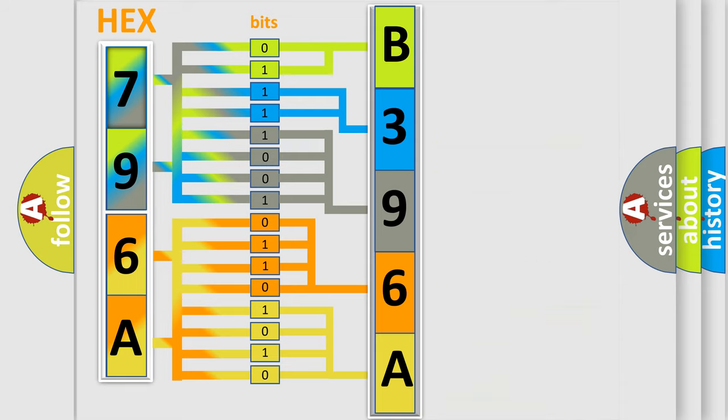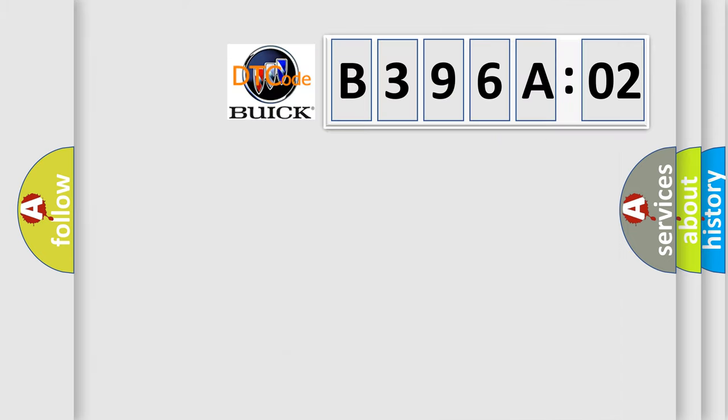We now know in what way the diagnostic tool translates the received information into a more comprehensible format. The number itself does not make sense to us if we cannot assign information about what it actually expresses. So, what does the diagnostic trouble code B396A02 interpret specifically for Buick car manufacturers?